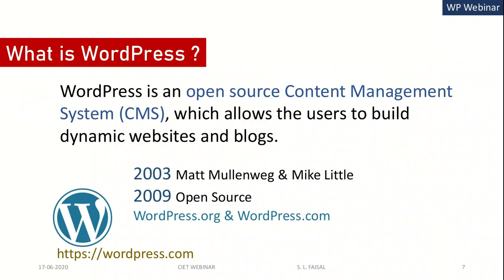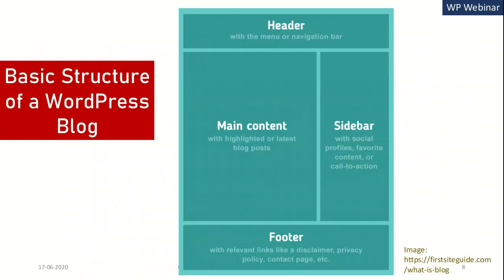Based on these key concepts, we are going to create a blog using WordPress. WordPress is an open source content management system (CMS) which allows users to build dynamic websites and blogs. WordPress is of two types: wordpress.org, where you install the software on your own hosting, and wordpress.com, which is used for creating blogs. It was launched by Matt Mullenweg and Mike Little in 2003 and became open source in 2009.